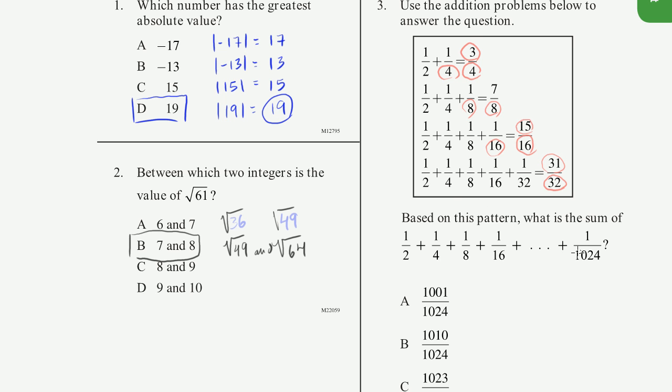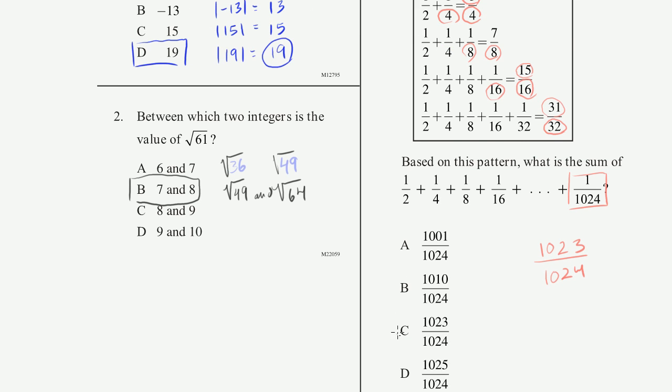So based on this pattern, if I were to go all the way to 1 over 1024, based on this pattern, my denominator is going to be 1024. And my numerator is going to be 1 less than 1024. So it's going to be 1023. And that is choice C, right there.